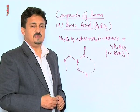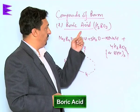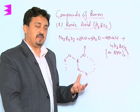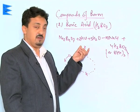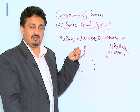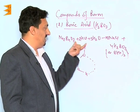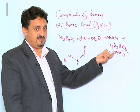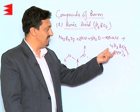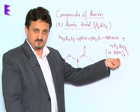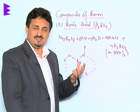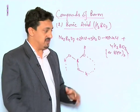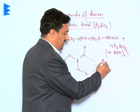The next compound of boron is boric acid, which is also called orthoboric acid. It is obtained by treating borax with acidified aqueous solution. When we take borax in an acidified aqueous medium, it gets hydrolyzed and forms NaCl and boric acid, which is H3BO3, also written as B(OH)3.